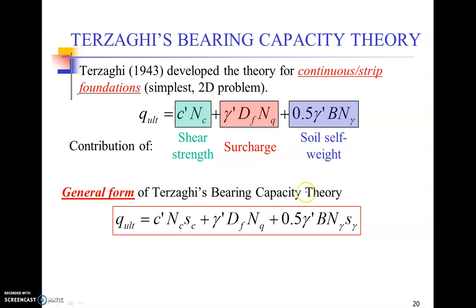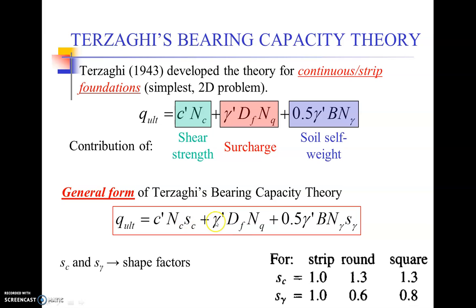General form of Terzaghi's bearing capacity equations also involve shape factors. We have got a table. This model is called the Terzaghi's model, this model is called the Terzaghi's general bearing capacity model. The only difference is Sc and S gamma are the shape factors. So Sc and S gamma values for strip, round, and square footings are given over here.